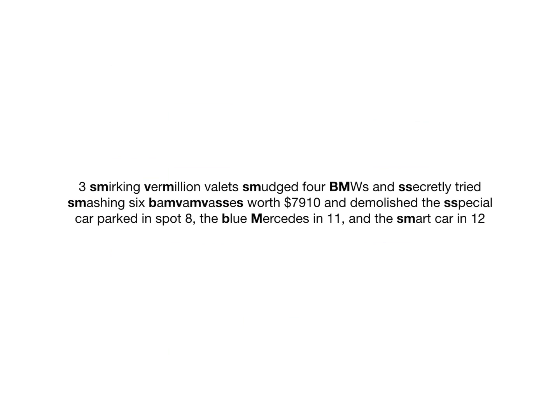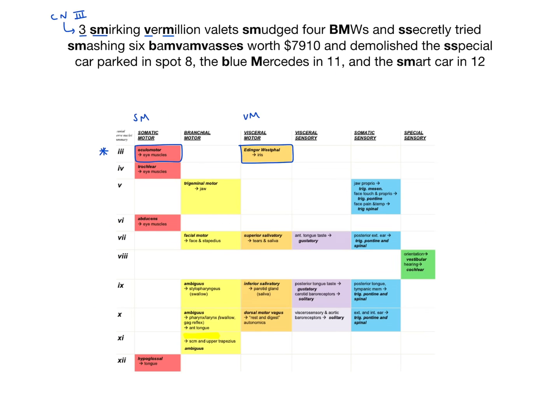Each word in the story represents a cranial nerve modality. Cranial nerve 3 is denoted by the three smirking vermilion valets, and it has somatic motor and visceral motor modalities — those are the oculomotor and Edinger-Westfall nuclei. The oculomotor is somatic motor because it controls eye movement, which you can consciously control. The visceral motor is the Edinger-Westfall, which sends information to the iris and ciliary muscles of the eye, which you cannot control.